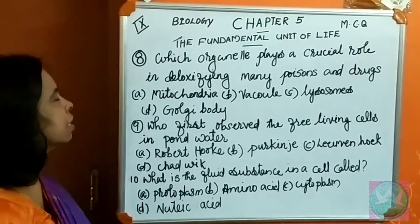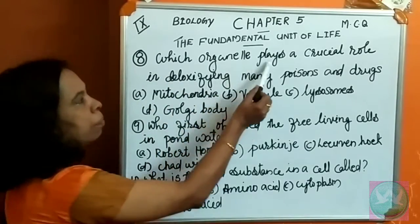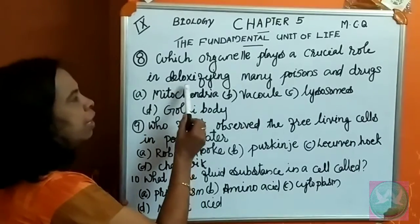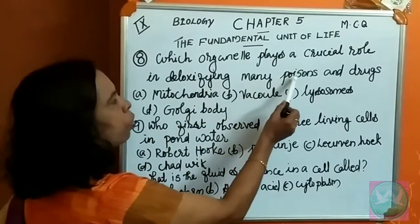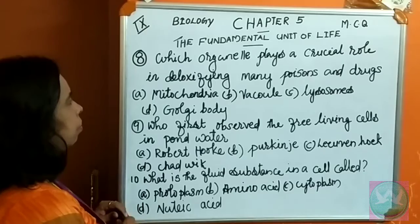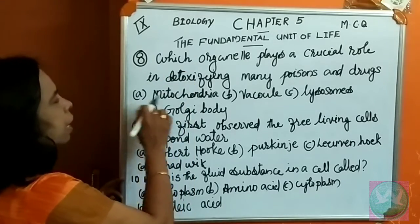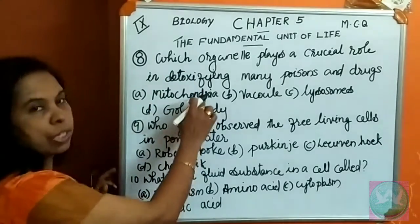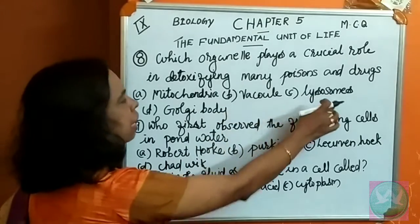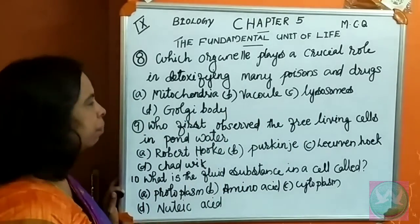Eighth question: which organelle plays a crucial role in detoxifying many poisons and drugs? Options: A. Mitochondria, B. Vacuole, C. Lysosomes, D. Golgi body.